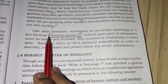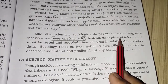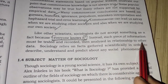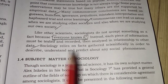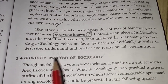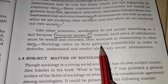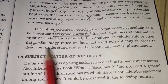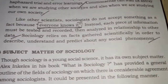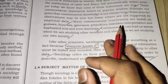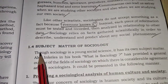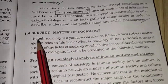Unlike common sense, sociology does not accept something as fact merely because everyone knows it. Instead, each piece of information must be tested, recorded, and analyzed in relationship to other data. Sociology gathers facts scientifically in order to describe, understand, and predict social phenomena. Everything must be analyzed, and no fact can simply be taken at face value without proper examination.